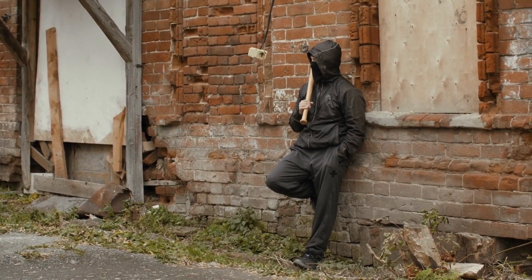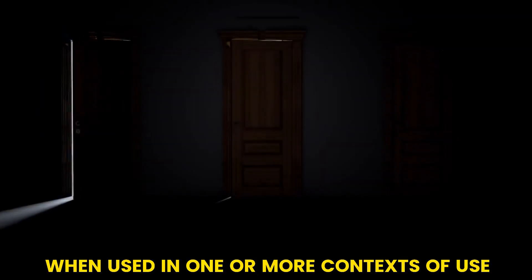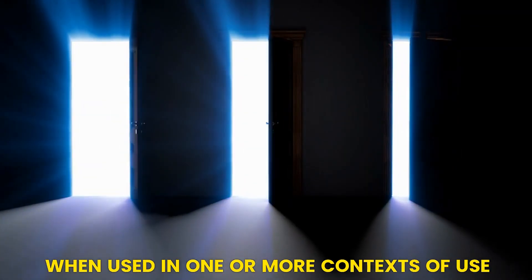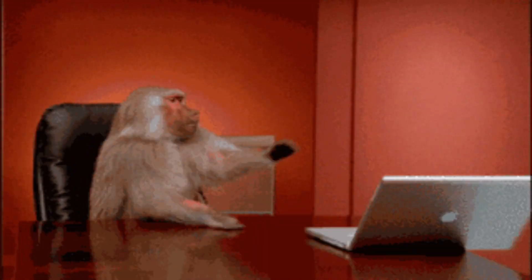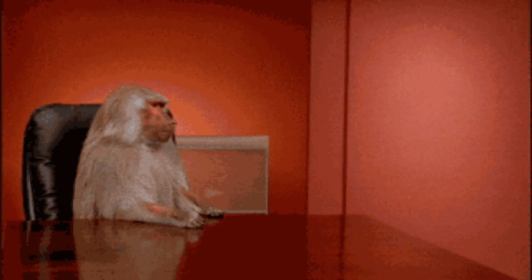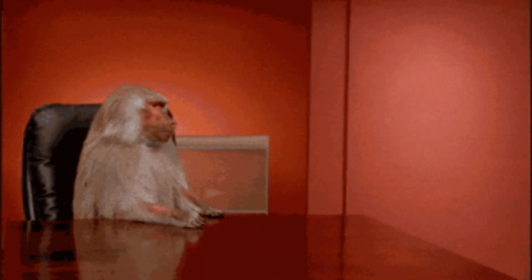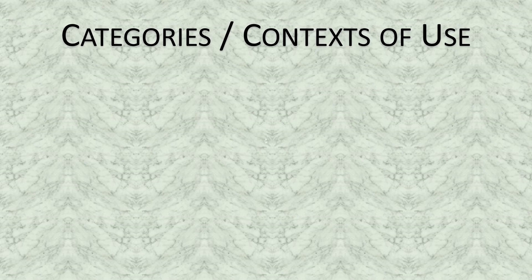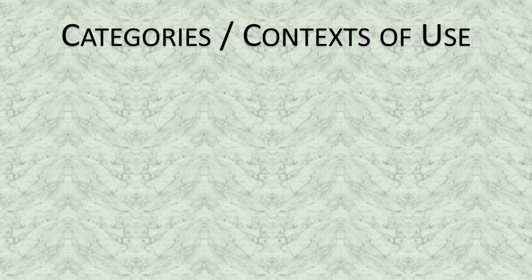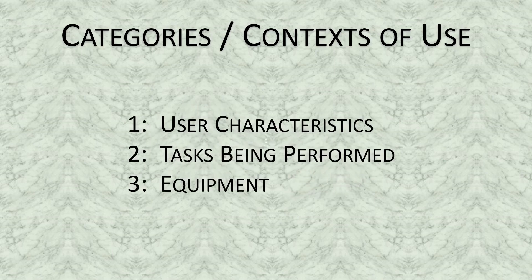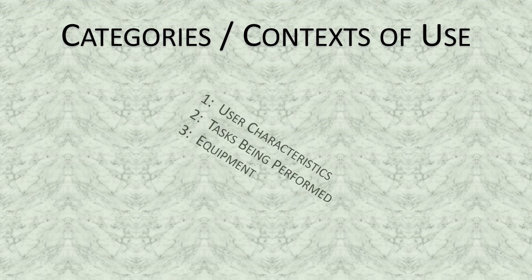I think that with those examples, I've beaten the subject of stakeholders to death. Let's move on to when used in one or more contexts of use. In most situations, our contexts of use do not include 1,000 monkeys and 1,000 laptops to randomly abuse our software system. Quality-in-Use must be established as used by real, honest-to-God users in specific real-life situations — in other words, contexts of use.